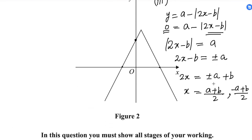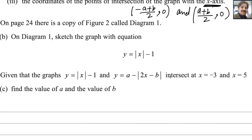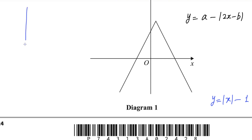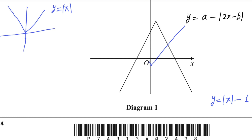You should show this working as well. For the next part, on a copy of Figure 2, sketch the graph with equation y equals the absolute value of x minus 1. The basic modulus graph y equals absolute value of x is V-shaped. This new graph applies a vertical transformation of minus 1, shifting the V-shape down one unit. The resulting blue line graph, shifted one unit down, is the sketch for y equals absolute value of x minus 1.